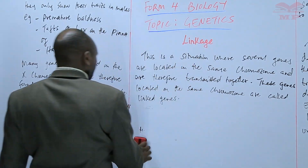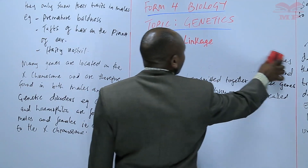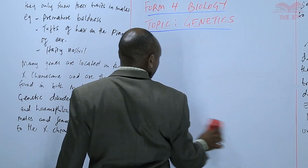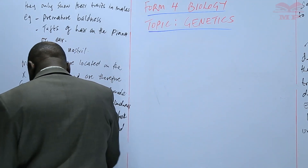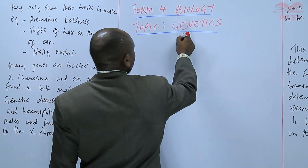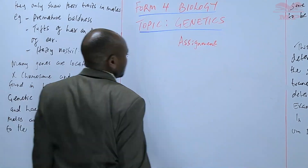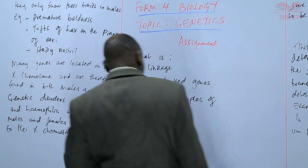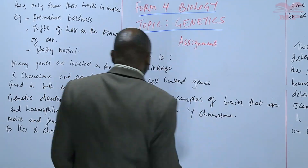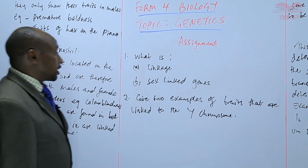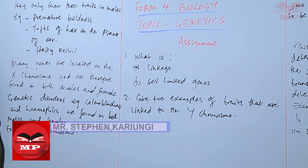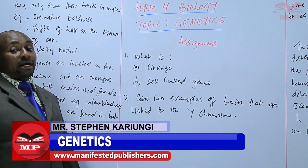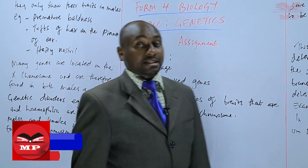But before that, let us have a short exercise as an assignment. Assignment number two: give two examples of traits that are linked to the Y chromosome. We will stop there until next time. Goodbye.